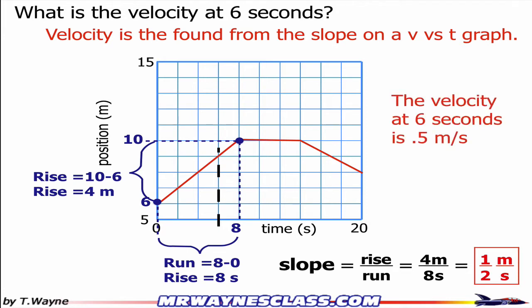So the answer to the question, what is the velocity at 6 seconds? The velocity at 6 seconds is 1 half a meter per second.